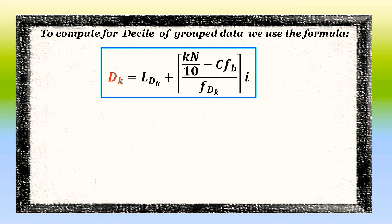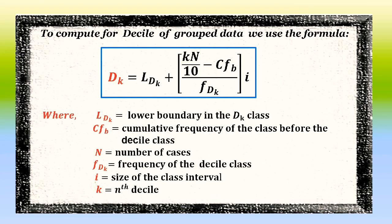To compute for deciles of group data, we use the formula: D sub K is equal to L sub DK plus the quantity K times N all over 10 minus CFB, all over F sub DK, times I. Wherein L sub DK is the lower boundary of the D sub K class, CFB is the cumulative frequency of the class before the decile class, N is the number of cases or total frequency, F sub DK is the frequency of the decile class, I is the size of the class interval, and K is the nth decile.